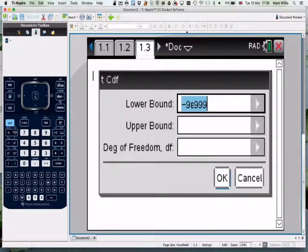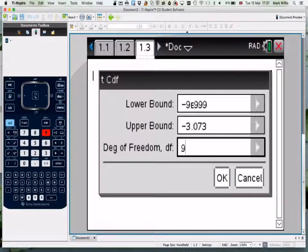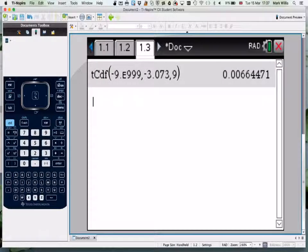Lower bound will be negative infinity. The upper bound will be -3.073, and this will be 9 degrees of freedom, which gives a value of 0.00664471.